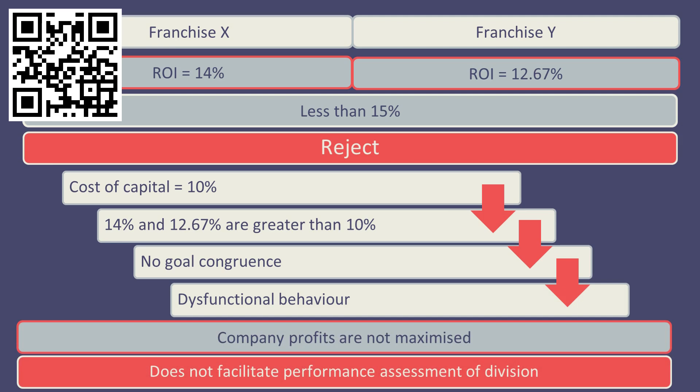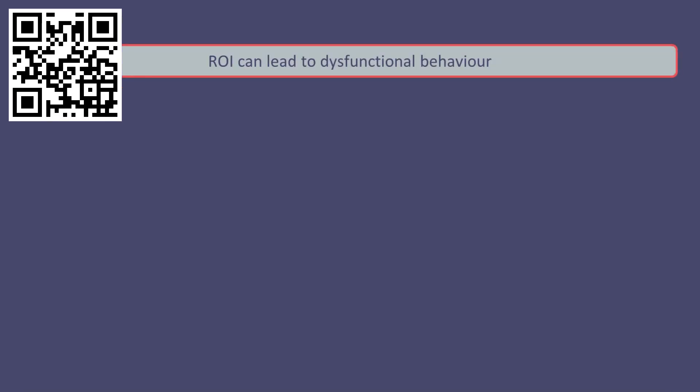As per the above example, it can be argued that using return on investment incurs divisional managers to make decisions that are in the best interests of that division, but not necessarily in the best interests of the company as a whole. This is referred to as dysfunctional behaviour or non-goal congruent behaviour.